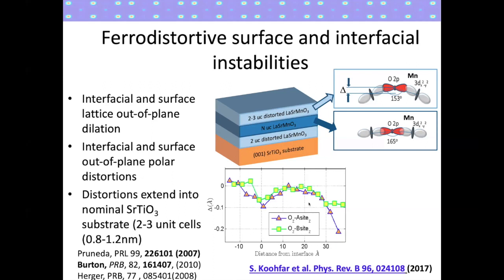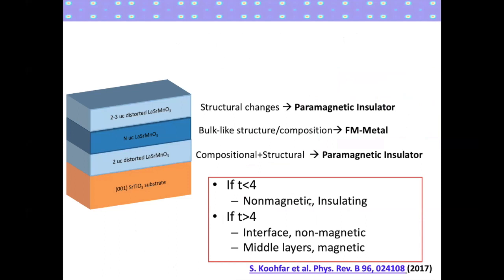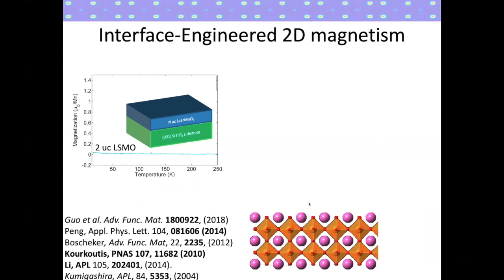In summary, due to surface and interface relaxations driven by the polarity of the LSMO, the top two unit cells of any film will have these structural distortions away from bulk. Growing on a non-polar substrate like STO also gives about two unit cells at the interface that are distorted. For ultra-thin films where the entire thickness is dominated by these distortions, you end up with a paramagnetic insulating ground state. The obvious question then is: can we fix this interface to recover the bulk-like structure?